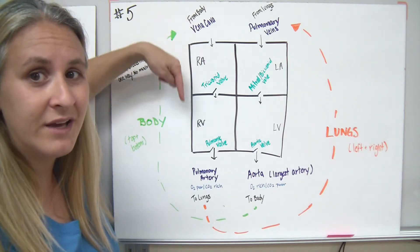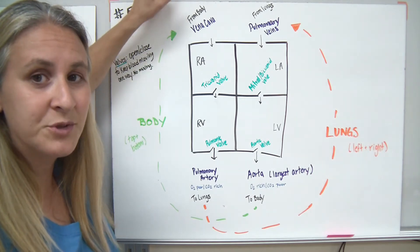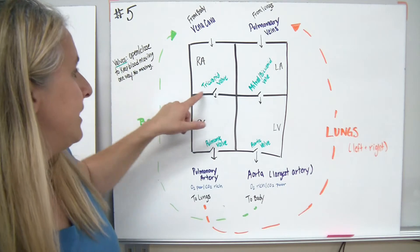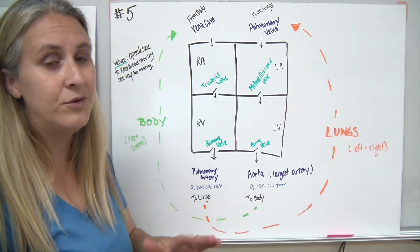We have an inferior vena cava, which comes from the lower part, and a superior vena cava, which comes from the upper part of your body. It's going to come into the right atrium, and it's going to go through a special valve. Remember, valves help blood to flow in only one direction.